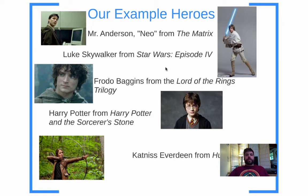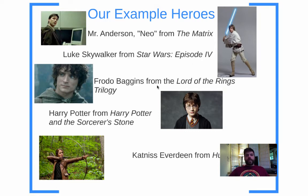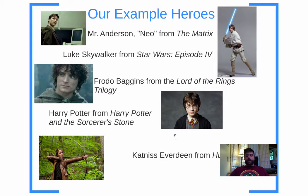Keep in mind it's going to be a circle and we're going to go all the way around it for our hero to develop. We're going to be going over many different heroes. Hopefully you've all seen these movies — with the exception of The Matrix, which was more popular with my generation. Our example heroes are: Mr. Anderson, aka Neo from The Matrix; Luke Skywalker from Star Wars Episode 4; Frodo Baggins from the first Lord of the Rings movie; Harry Potter from Harry Potter and the Sorcerer's Stone; and Katniss Everdeen from The Hunger Games.